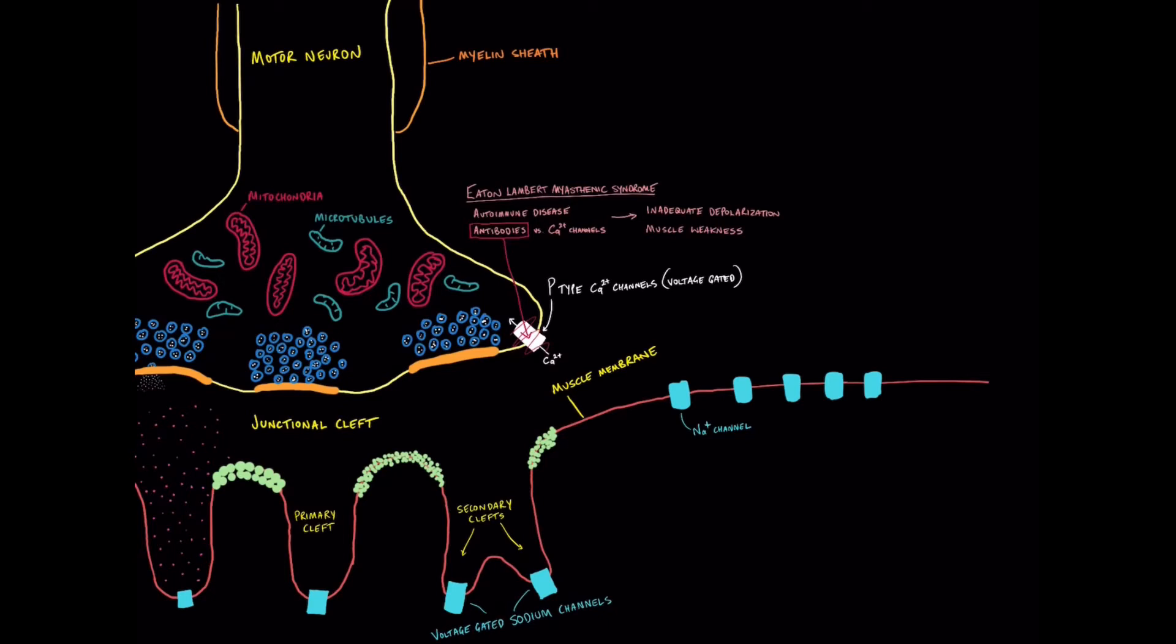And it's an autoimmune disease and there's antibody that is produced. And that antibody attacks these calcium channels, specifically these P-type calcium channels. And then that leads to impaired calcium entry into the nerve terminal, which gives you inadequate depolarization. And then they get muscle weakness.